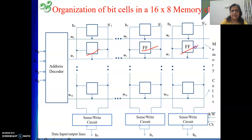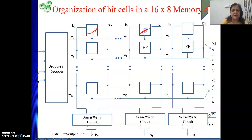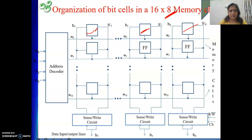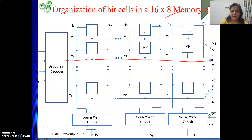Whenever a word line is enabled, whatever cells are connected in that particular row will all be enabled. We know that in a flip-flop, there are input lines, one enable line, and two output lines — Q and Q bar. Here, one particular cell is nothing but a flip-flop. One flip-flop can store one bit of data, so in one row there are eight flip-flops. We have drawn three here with dotted lines to represent the rest. The flip-flop's enable line is connected to the word line coming from the decoder.